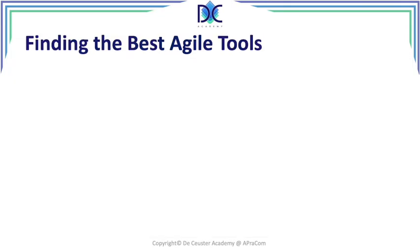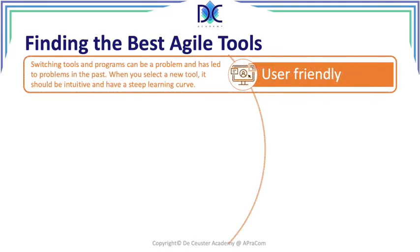When you look at Agile, you also want to find a tool. There are a lot of tools available — we have Monday, we have Trello, and many other programs. When you want to select one, first of all it should be user-friendly. We know that changing from one program to another always creates problems, so you want software with a very steep learning curve that you can get used to very quickly.